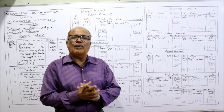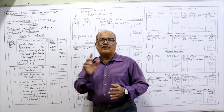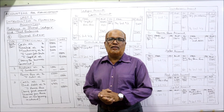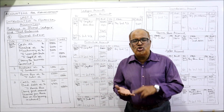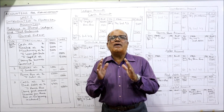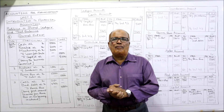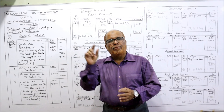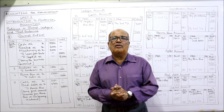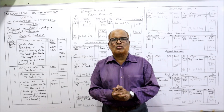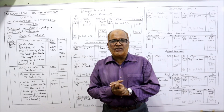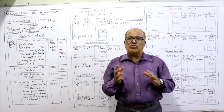This is the end of unit number one. The heading for this unit is Introduction to Financial Accounting, where we have done problems on journal, ledger and trial balance. So many videos I have uploaded for this subject — Accounting for Management — and all five units are completed, particularly for MBA students.